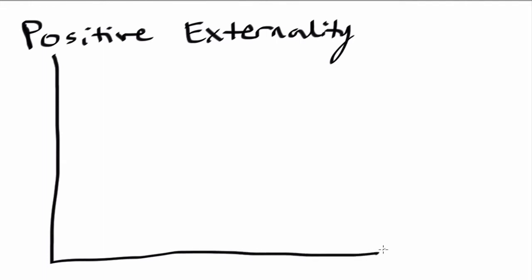So a positive externality, you have an overall marginal social cost. And so your marginal social cost is just going to be this upward sloping line.